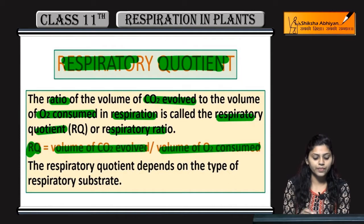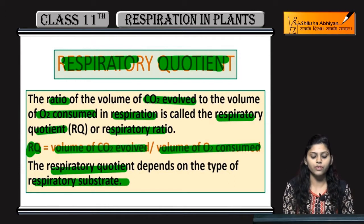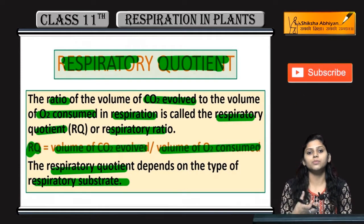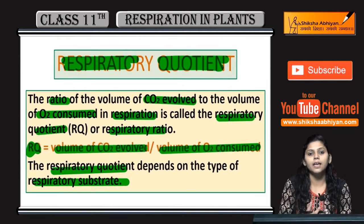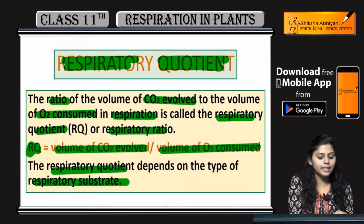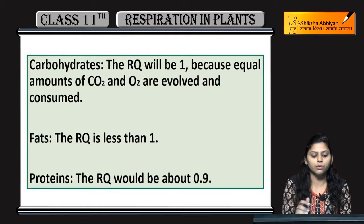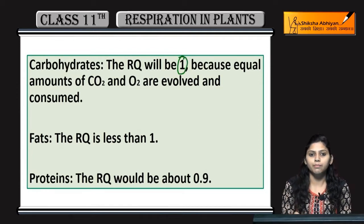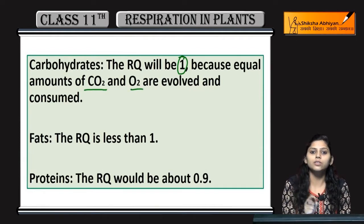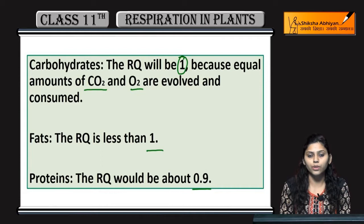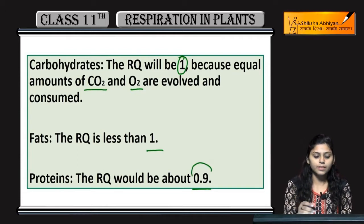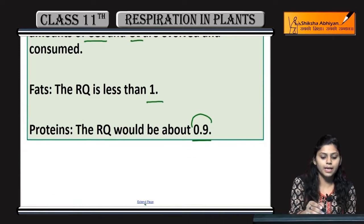Respiratory Quotient depends on the type of respiratory substrate — whether we are using sugars, carbohydrates, fats, or proteins. Based on how much CO2 is evolved from their consumption, the RQ is determined. The RQ of carbohydrates is 1, because CO2 evolved equals O2 consumed. For fats and proteins, RQ is less than 1; for proteins it is around 0.9.